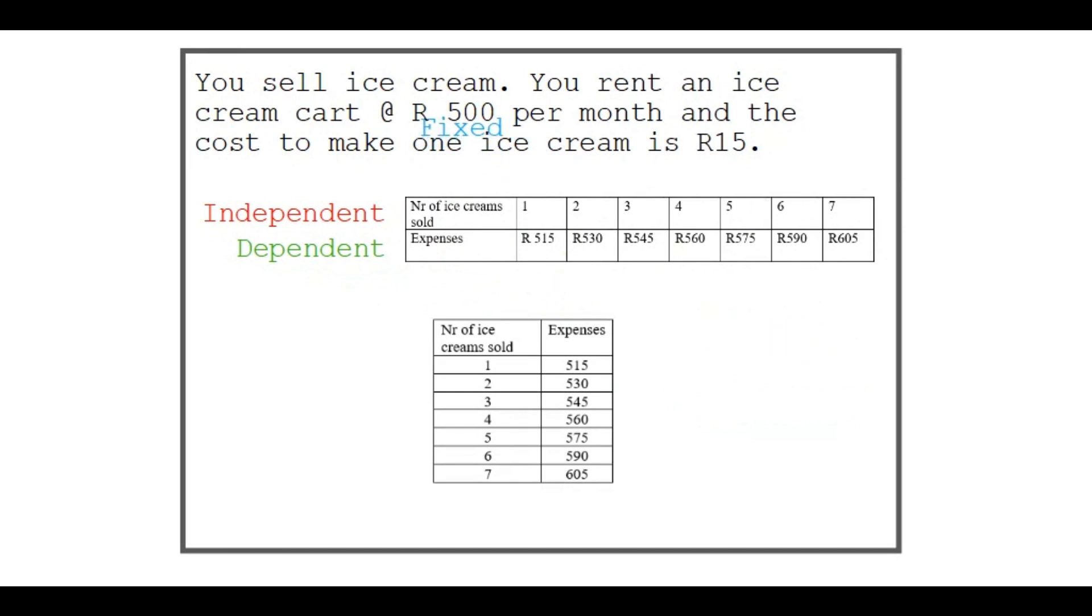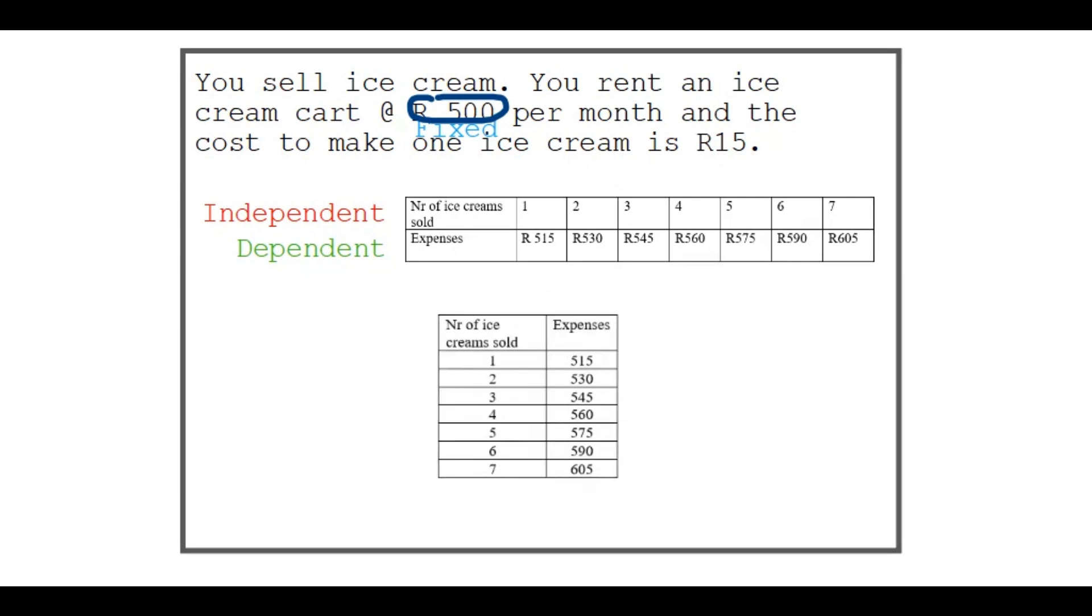Now if you're going to look at the fixed variable, we're not able to see it in the table, so that's going to be the 500 Rand, because that's fixed every month you pay that for the ice cream cart.